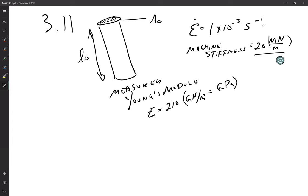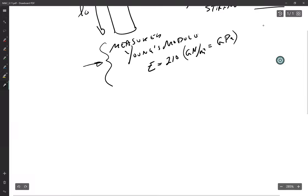So this problem I found actually fairly confusing. And what I found confusing about it is that I have no idea why they gave us a strain rate. As far as I can tell, the real trick here is to relate the measured Young's modulus to the stiffness of the machine and the subsequent part stiffness.